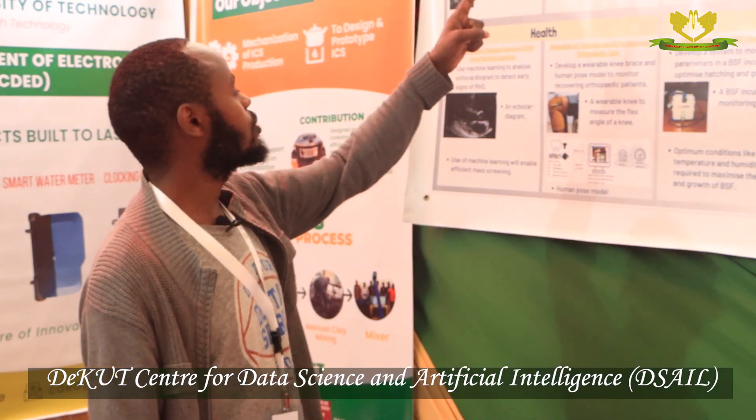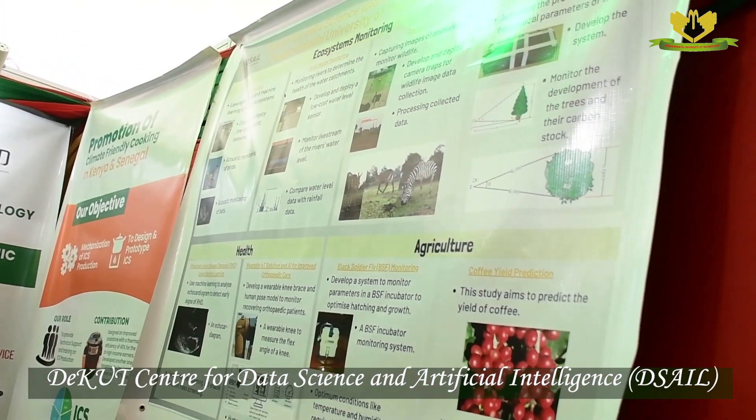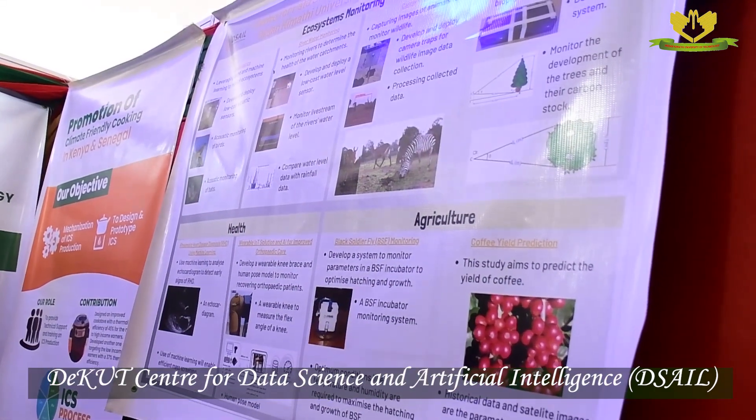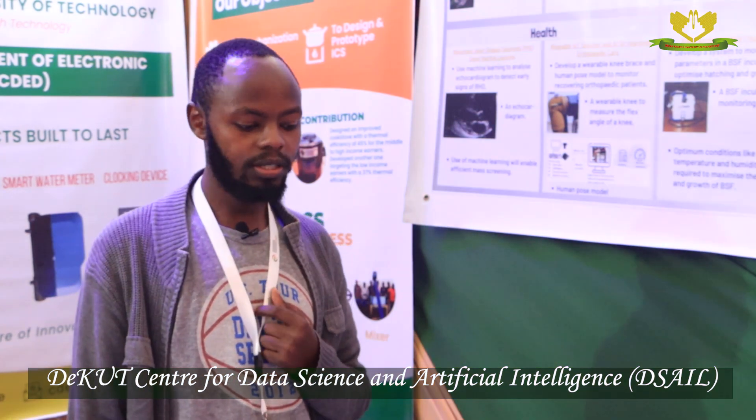The areas we deal with are ecosystems monitoring, health, and agriculture. Under ecosystem monitoring, we develop sensors to collect data in our ecosystems and then use machine learning to make inferences from the collected data about the status of our ecosystems.